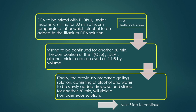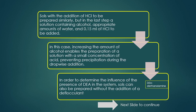After that, alcohol is added to the titanium-DEA (diethanolamine) solution and stirring is continued for another 30 minutes. The composition ratio of titanium butoxide to diethanolamine to alcohol is maintained at 2:1:8 by volume. Then the previously prepared sol-gel solution consisting of alcohol and water is slowly added drop-wise and stirred for another 30 minutes to give a homogeneous solution. Finally, a solution containing alcohol, appropriate amounts of water, and 0.15 ml of hydrochloric acid is added.